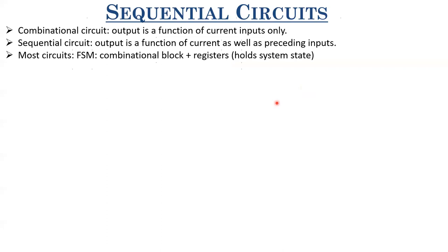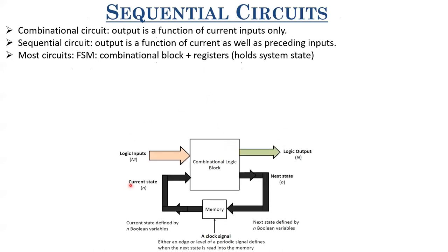Most circuits that you encounter in daily life are some form of finite state machine. A finite state machine is an assimilation of some combinational logic block and registers. Registers are systems which hold the state of any system — they hold the system state. The system state is also a Boolean variable. Let me show you the block diagram of a sequential circuit or FSM.